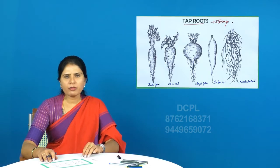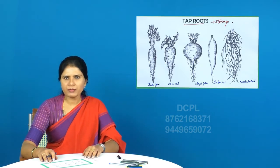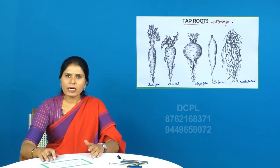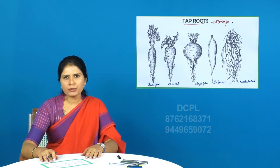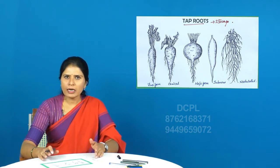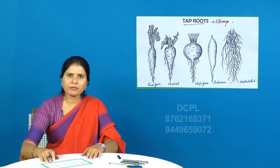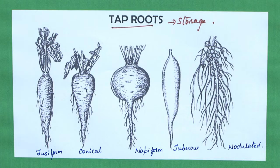Now you are familiar with the primary functions of the root. We will now move on to the other functions of roots, wherein the tap root and the adventitious roots are modified to perform functions apart from the normal ones. First we will study how exactly the tap root system is modified to perform other functions, predominantly storage.